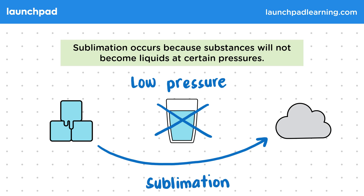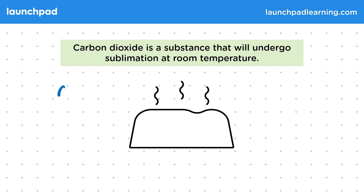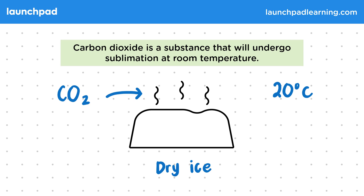Let's have a look at a well-known example of sublimation. Carbon dioxide is a substance that will undergo sublimation at room temperature. Solid CO₂ is also called dry ice, and it's carbon dioxide that's been frozen. Sublimation occurs at room temperature, as carbon dioxide can't be liquid at normal pressure, so it changes straight to a gas as it heats up.